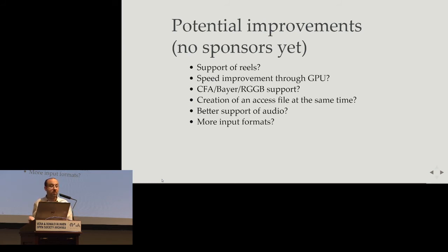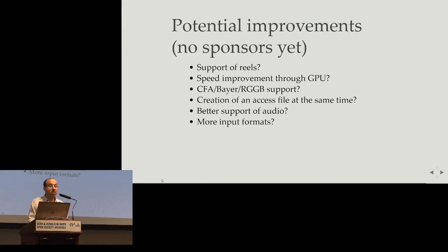We can also do speed improvement for the GPU — we hope it could be interesting to increase speed with the GPU. We could have Bayer support, so instead of having RGB we could try with a native format of some cameras. We could also work on the creation of an NXS file at the same time — so you don't have only your lossless Matroska file with FFV1. If you want an access file at the same time, we could improve our scripting to have everything automatic.